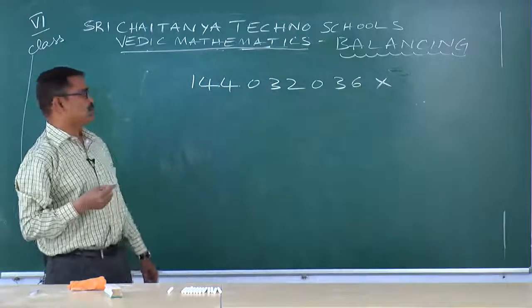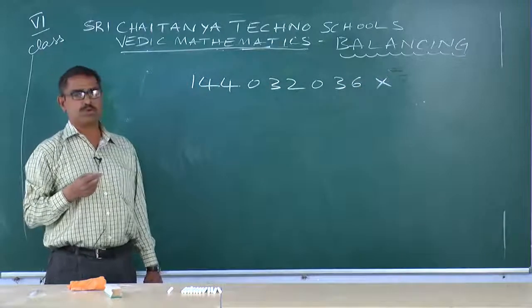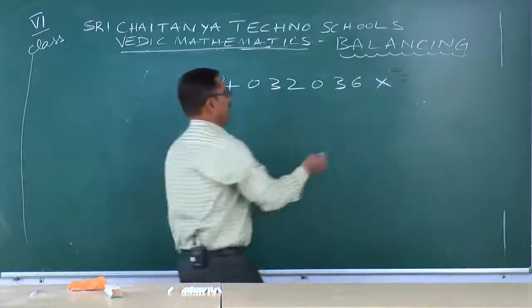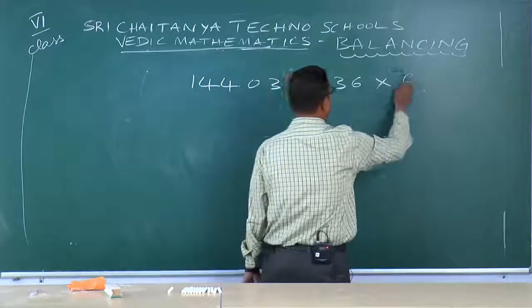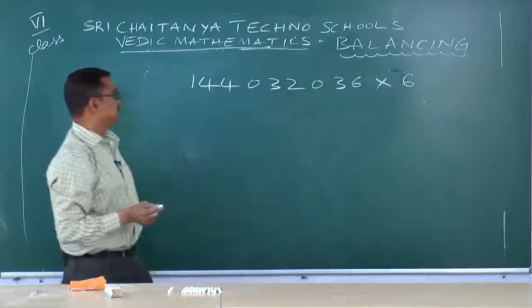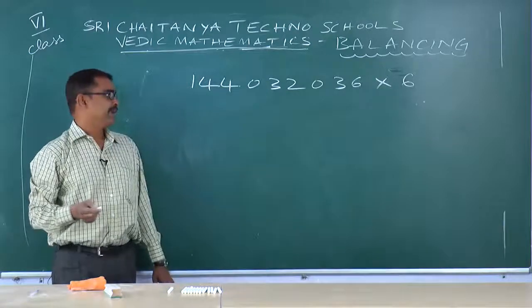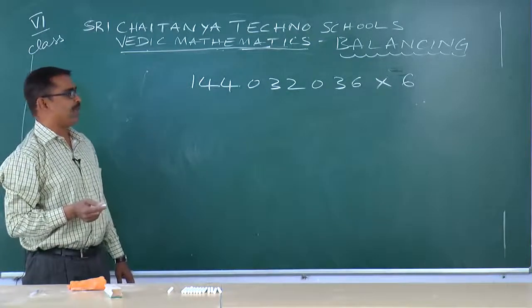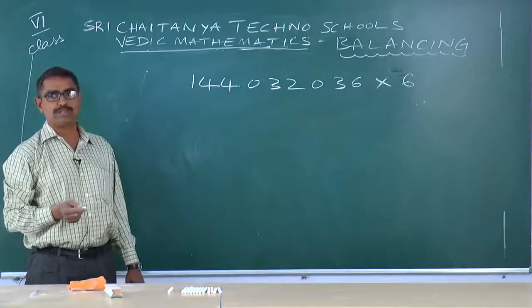1, 4, 4, 0, 3, 2, 0, 3. 6 into 6: answer is 8. 6, 4, 1, 9, 2, 2, 1, 6.